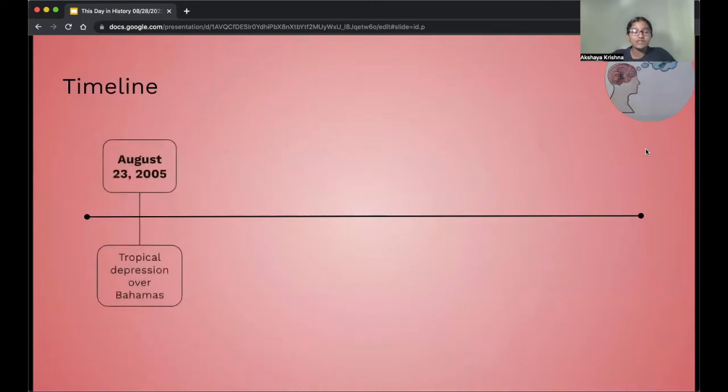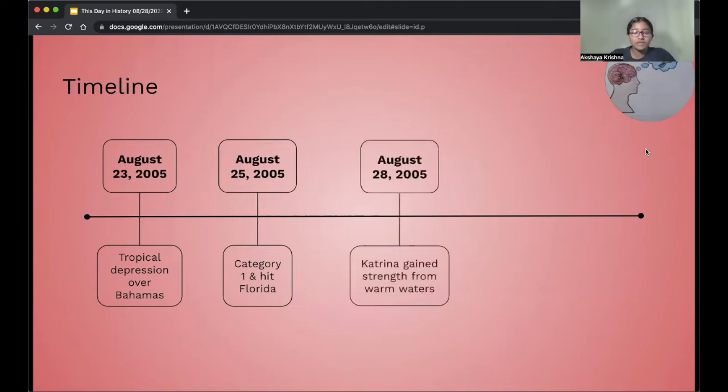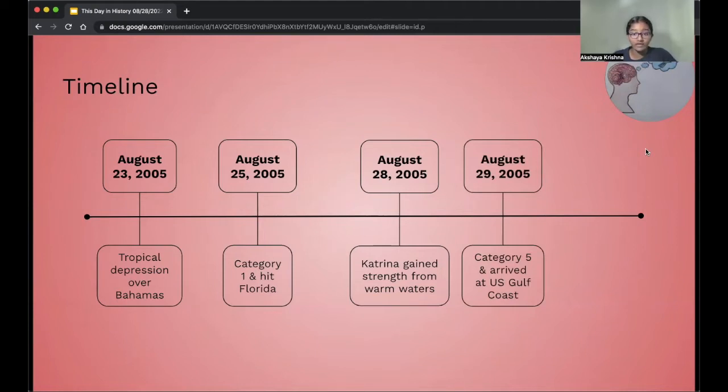On August 23rd of 2005, a tropical depression over the Bahamas occurred. A few days later, this tropical depression turned into a Category 1 hurricane and it hit Florida. Three days later, on the 28th of August, Hurricane Katrina gained strength from warm waters. And finally, the very next day, this Category 1 hurricane transitioned to a Category 5 and it arrived at U.S. Gulf Coast.